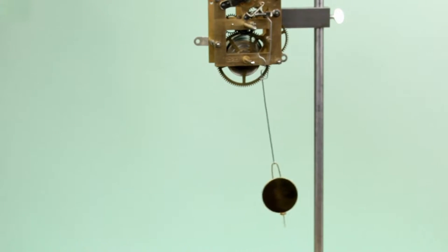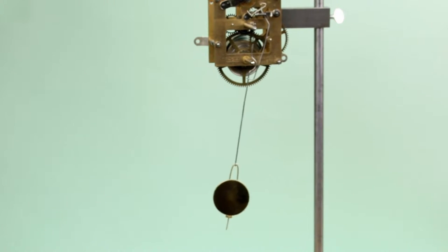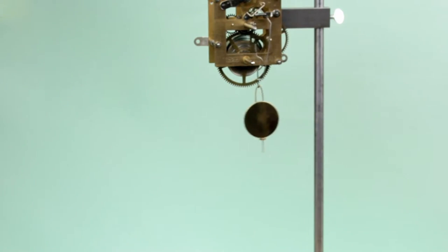The length of the pendulum determines the rate at which it swings back and forth. The longer the pendulum, the slower it swings. The shorter, the faster.